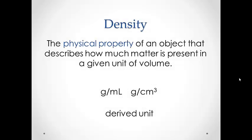So in our study of physical properties we now come to density. We have discovered that density is the property of an object that describes how much matter is present in a given unit of volume. Remember we can label density as grams per milliliter or grams per cubic centimeter. This is actually what we call a derived unit because we are using the relationship between two other measured properties to determine it.